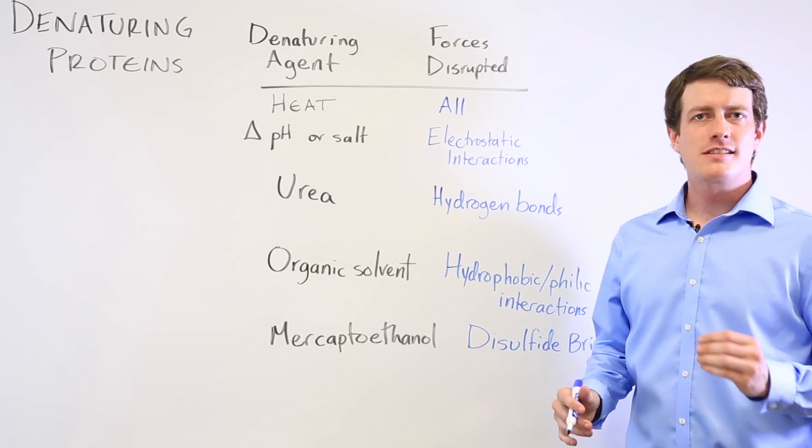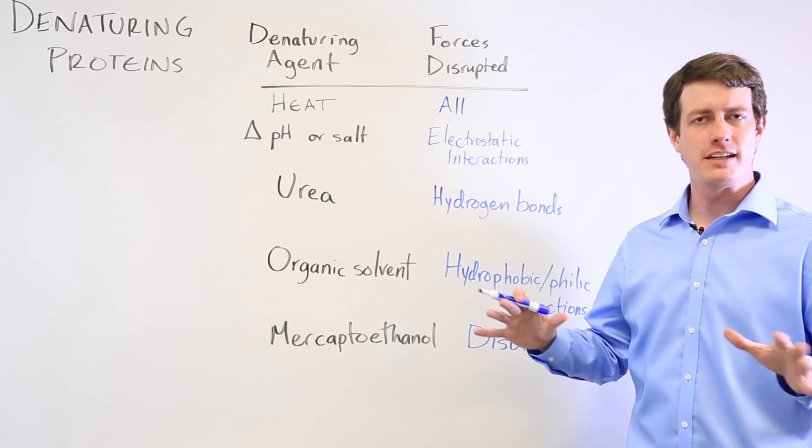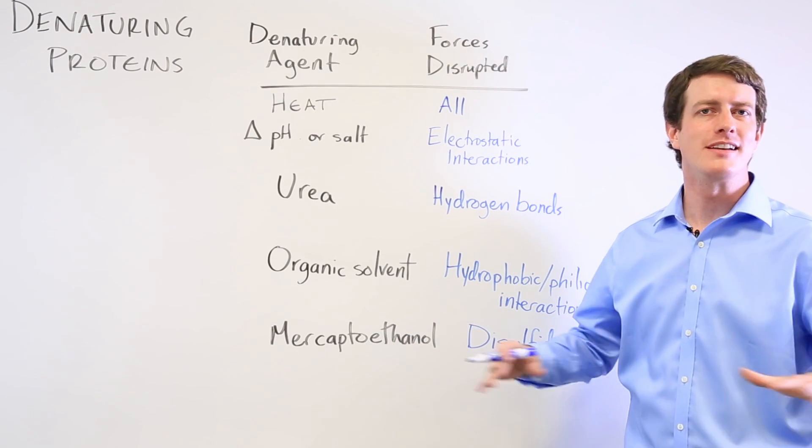To denature a protein is to cause its three-dimensional conformation to unwind and for it to become a linear protein again.